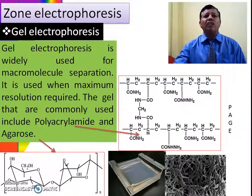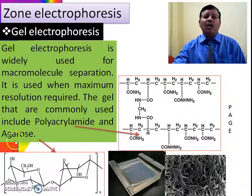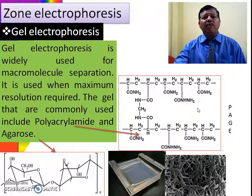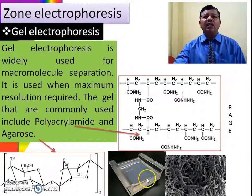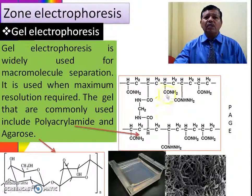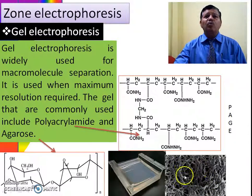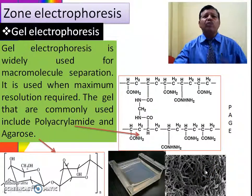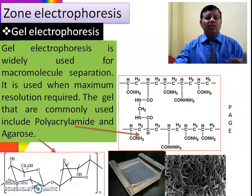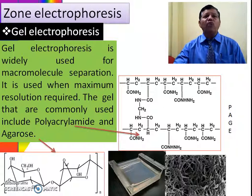In gel electrophoresis, polyacrylamide gel or agarose gel is generally used. When the gel is prepared in water, it forms a transparent material. When placed in a tray, the transparent gel takes on a defined shape. The gel is a porous material, and through these pores, components move towards the opposite electrode at a constant speed. This makes it very useful for the separation of charged macromolecules.